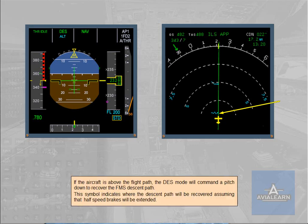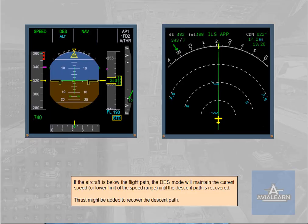The descent path recovery symbol assumes that half speed brakes will be extended. If the aircraft is below the flight path, the descent mode will maintain the current speed or lower limit of the speed range until the descent path is recovered. Thrust might be added to recover the descent path.